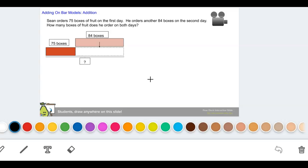How many boxes of fruit does he order on both days? So we have this part of the bar model, this part, the whole thing together is the total, and that's what we don't know. Again, I'm going to solve this three ways.